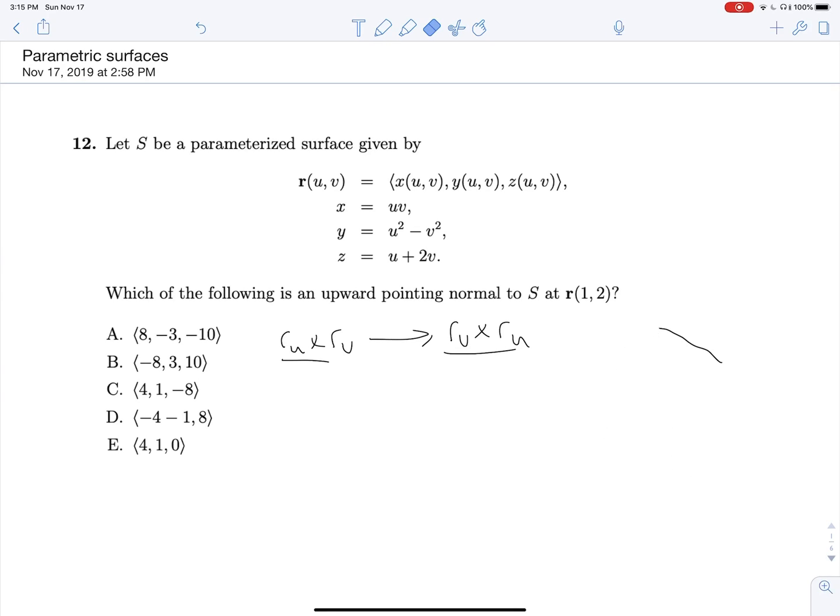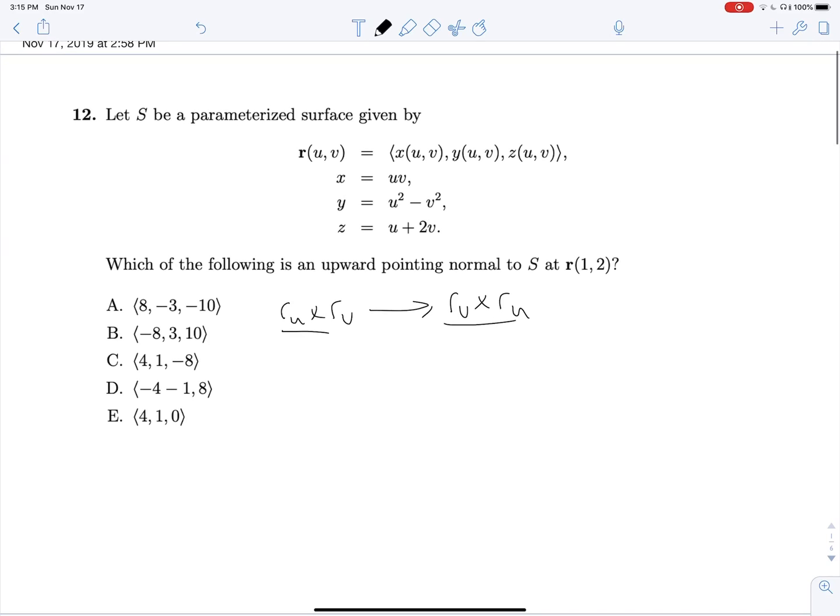So often what these exams will try to do is they will provide you with an answer. The answer choice is usually the opposite of what you got, and you have to realize that there are actually two normal vectors that we could have found. We found the other one, so all we have to do is flip our signs, and there's our answer.